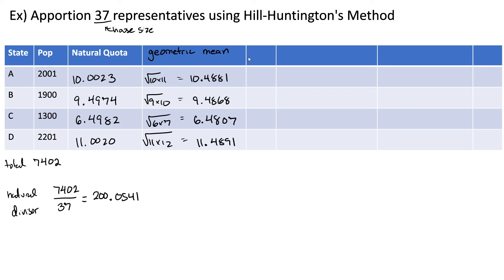Now we can figure out our initial allocation. The first quota of 10.0 is less than its geometric mean of 10.4, so this rounds down to 10. The next natural quota of 9.49 is greater than its geometric mean of 9.48, so this rounds up to 10. Then we have a natural quota of 11.0, which is less than its geometric mean of 11.4, so this rounds down to 11. If we add all of these up we end up getting 38, which is too large.